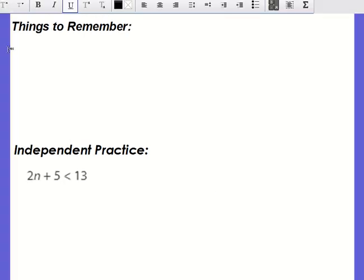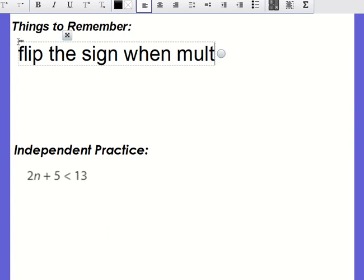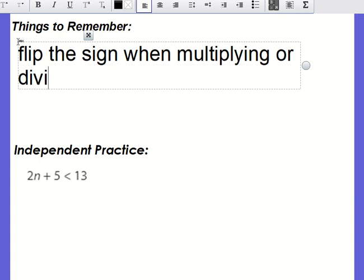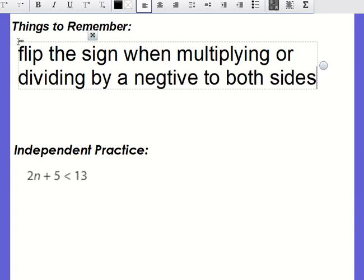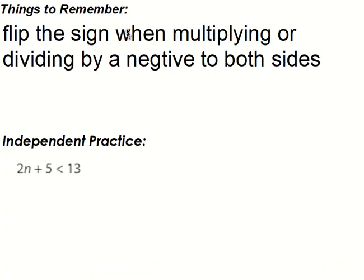All right. Things to remember. Just the main one, which is always, always important. Flip the sign when multiplying or dividing by a negative to both sides. It's that important. I'm going to say it every time we talk about solving inequalities. Okay, it's that important. All right. So here's your independent practice. Solve it. And then don't forget to graph it. See you next time.